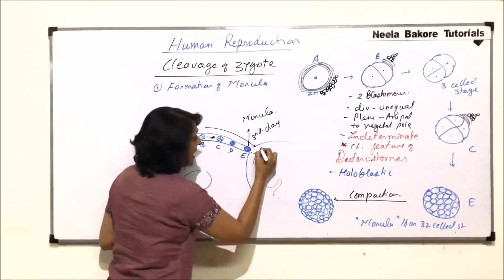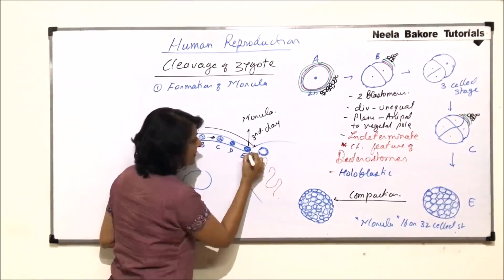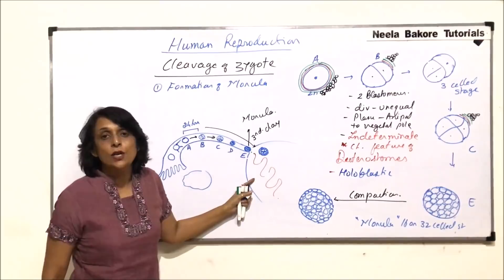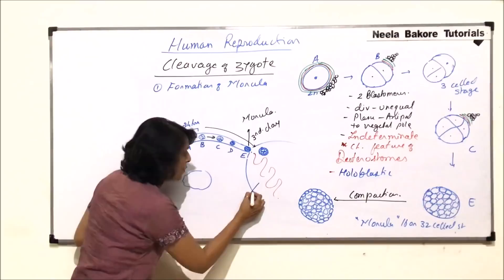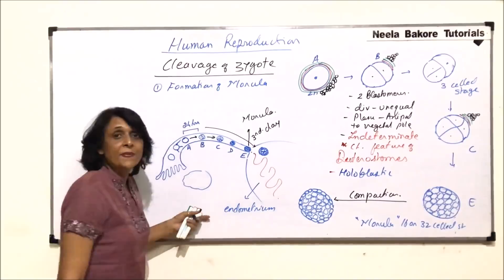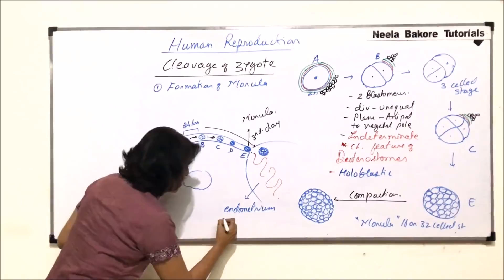This morula, which has undergone compaction — and I am drawing it slightly bigger so that we can see all these cells, though otherwise it is the same size — has now reached the uterus. This folded layer which we are seeing here is the endometrium. The endometrium is highly folded, glandular, and vascular.